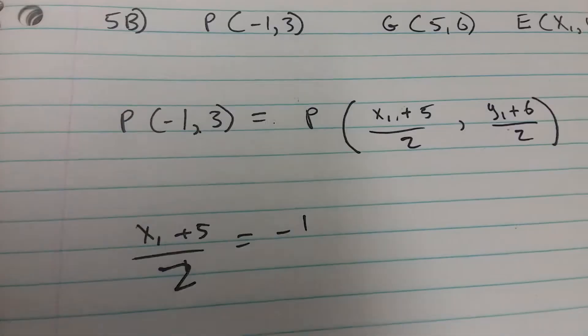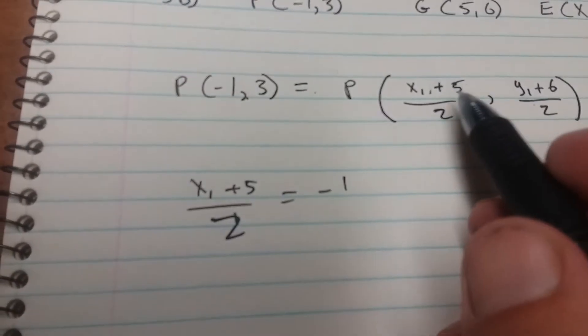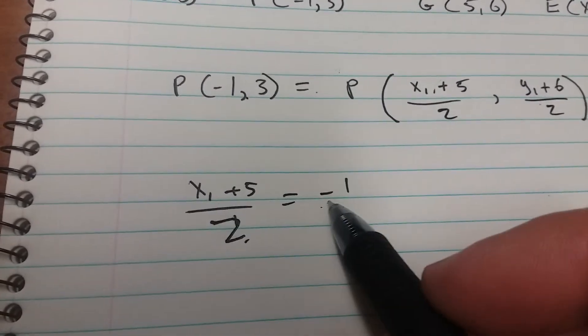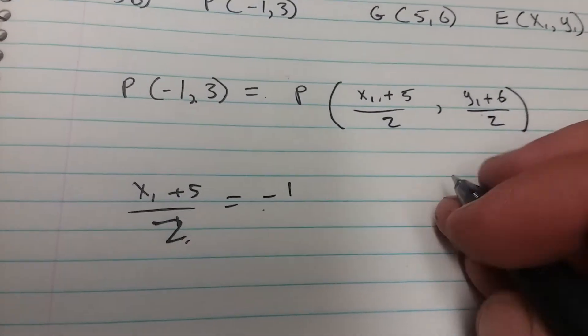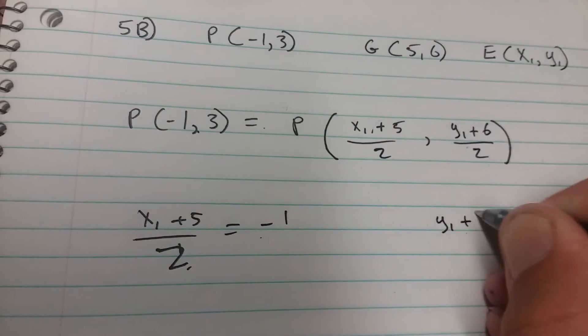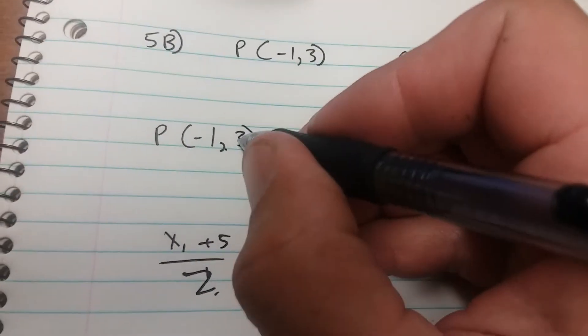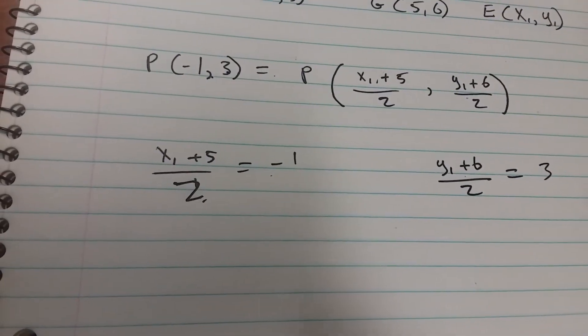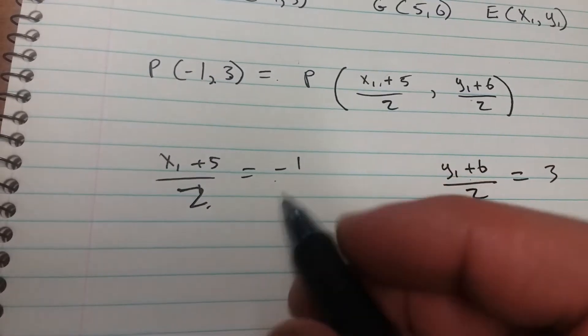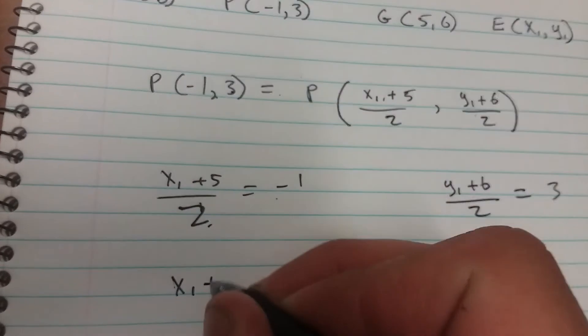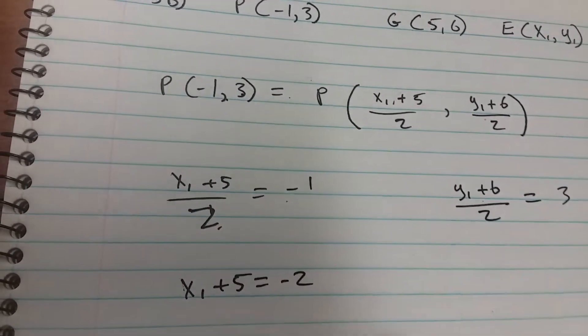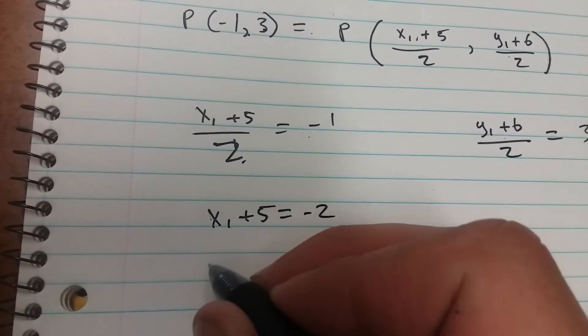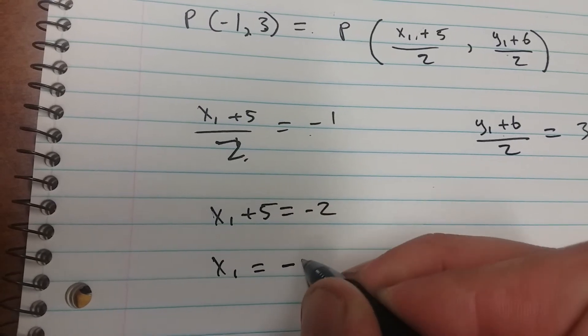Okay, x₁ plus 5 over 2 equals negative 1, and then you have y₁ plus 6 over 2 equals 3. All right, so you're going to solve for x₁ and y₁. We'll multiply both sides by 2 here. x₁ plus 5 equals negative 2. Subtract 5 from both sides, x₁ equals negative 7.